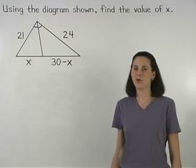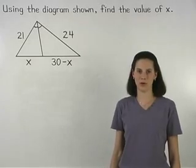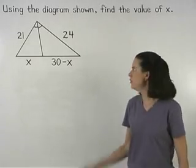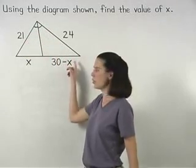Here, we're asked to use the diagram shown to find the value of x. Notice that we have a ray that bisects an angle of the large triangle,